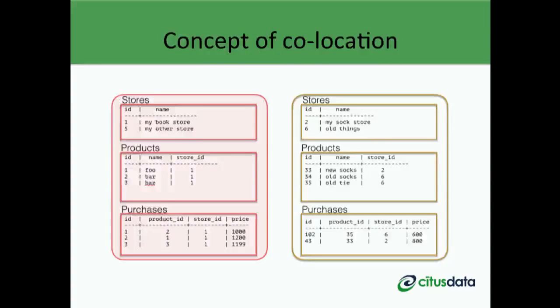Looking at co-location more deeply: in this diagram, we have three tables all distributed on the store ID. When you run a transaction or join scoped to a particular store, you can always push it down without having to pay the cost of managing those operations over the network. Similarly, you can create foreign key constraints across these tables without incurring the network penalty.